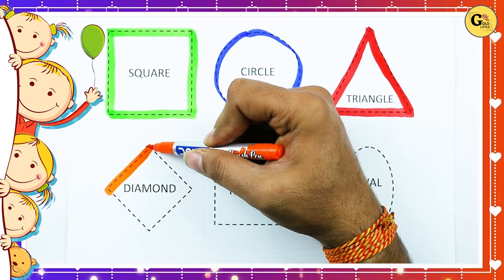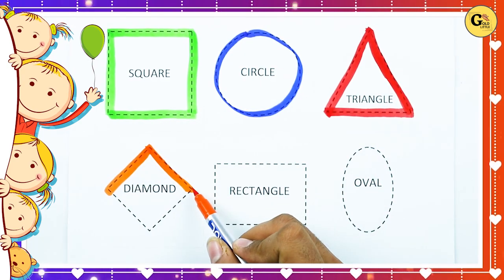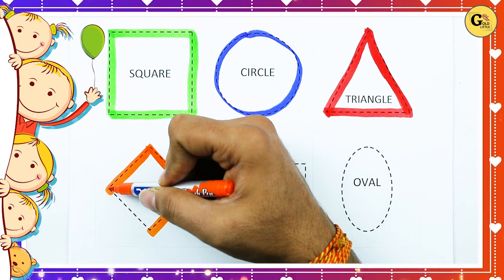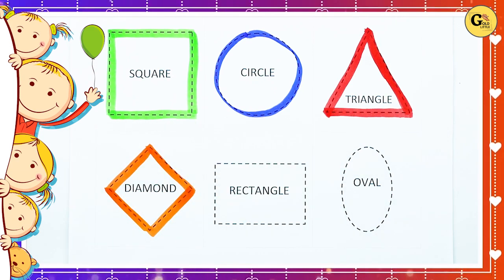One sliding line, two sliding line, three sliding line, four sliding line. It's a diamond, orange color, diamond.